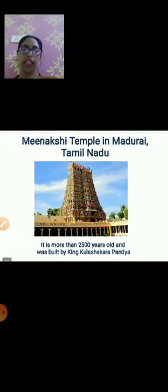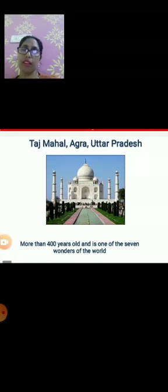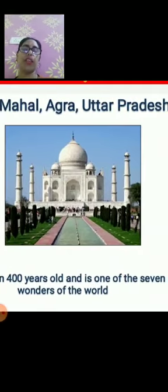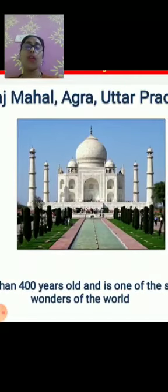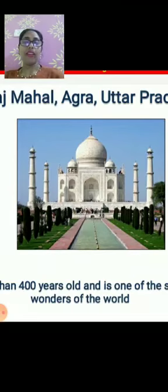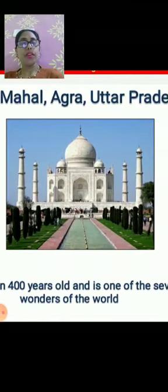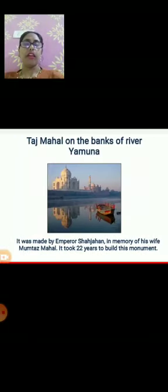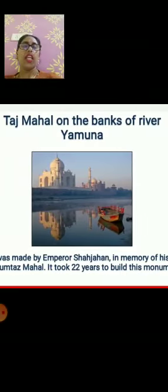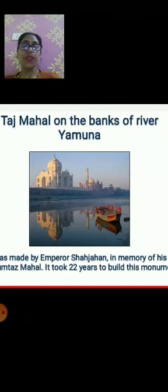Next, we will see Taj Mahal. Taj Mahal is there in Agra, Uttar Pradesh. It is one of the seven wonders of the world and is 400 years old. It was built by Emperor Shah Jahan in the memory of his beloved wife, Mumtaj Mahal. Taj Mahal is on the bank of River Yamuna, and it took 22 years to build.